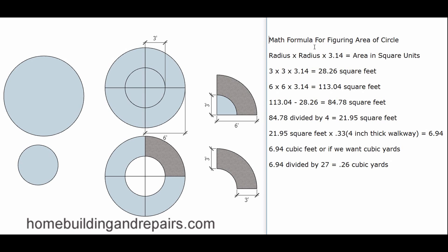Let's take a look at the math. The formula for figuring the area of a circle is radius times radius times 3.14, and this gives us the area in square units. If we are using feet, it will give us the area in square feet. Inches or yards will give us the area in those measurements. The radius is half the distance from the center of the circle; diameter would be double the distance.